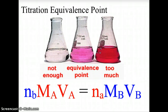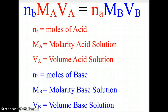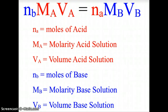The formula for this is: nB × mA × vA = nA × mB × vB. In that equation: nA is the moles of acid from the balanced chemical equation for the titration; mA is the molarity of the acid solution; vA is the volume of the acid solution; nB is the number of moles of the base from the balanced chemical equation; mB is the molarity of the base solution; and vB is the volume of the base solution.